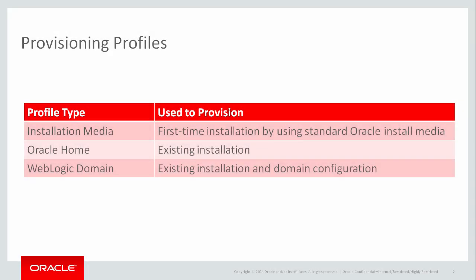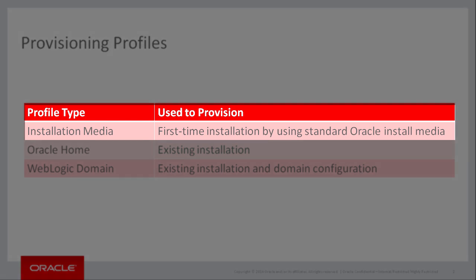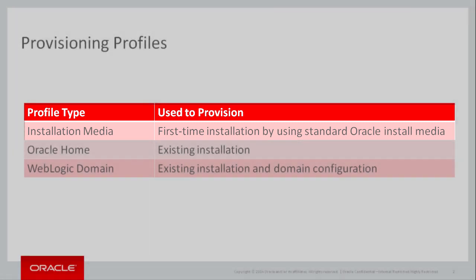Oracle Enterprise Manager supports the creation of three different types of provisioning profiles. The first and simplest type is an installation media-based provisioning profile. This type of profile executes one or more previously downloaded product installers. You can download this installation media from the standard Oracle eDelivery site or the Oracle Technology Network site. Administrators use this type of provisioning profile to perform a fresh installation of WebLogic Server for the very first time.